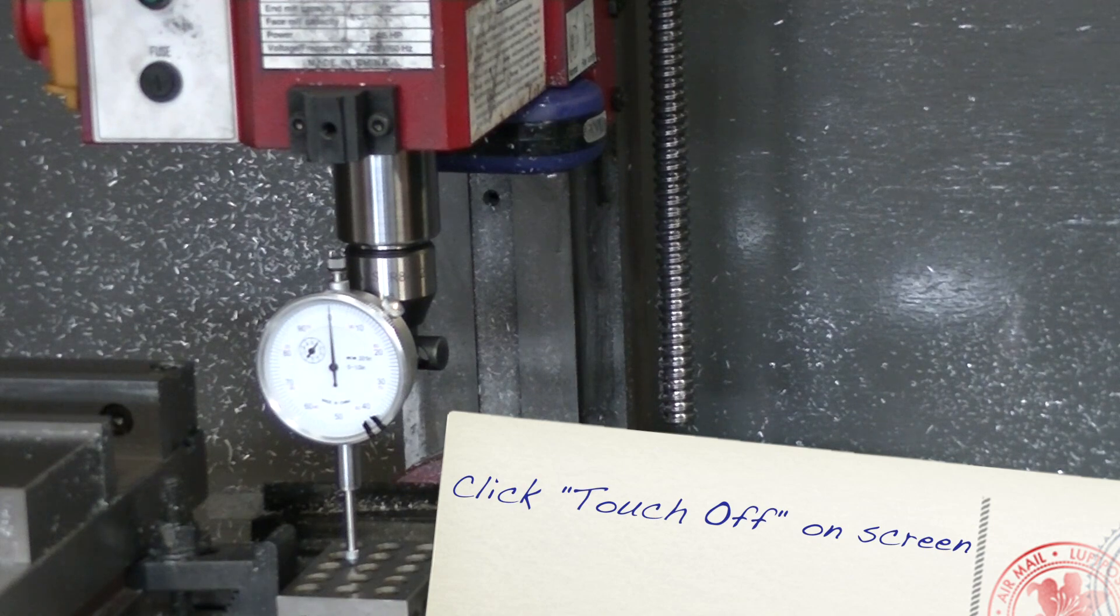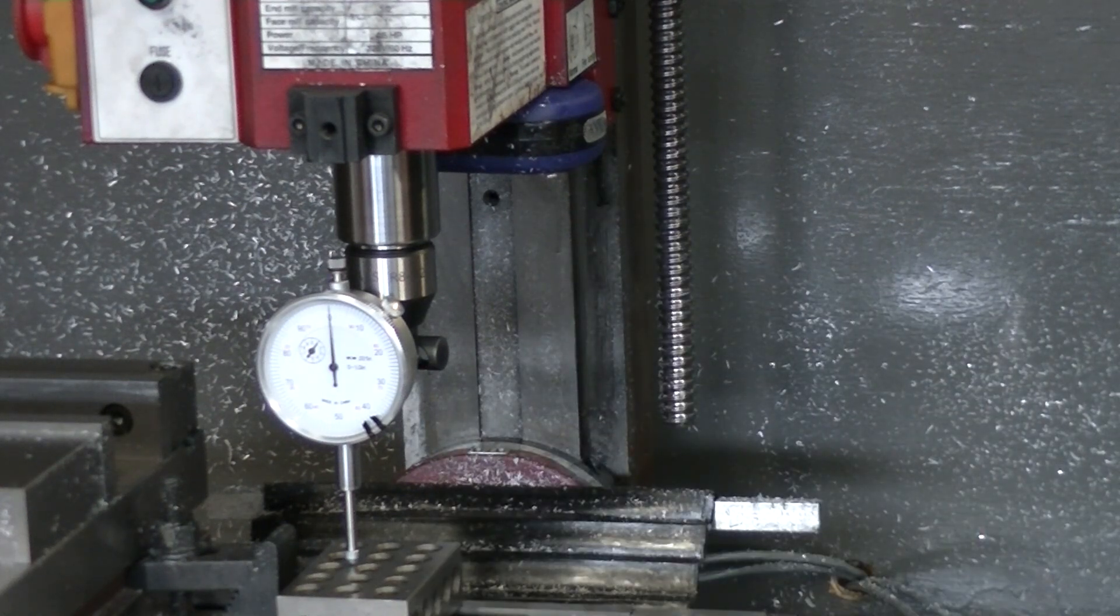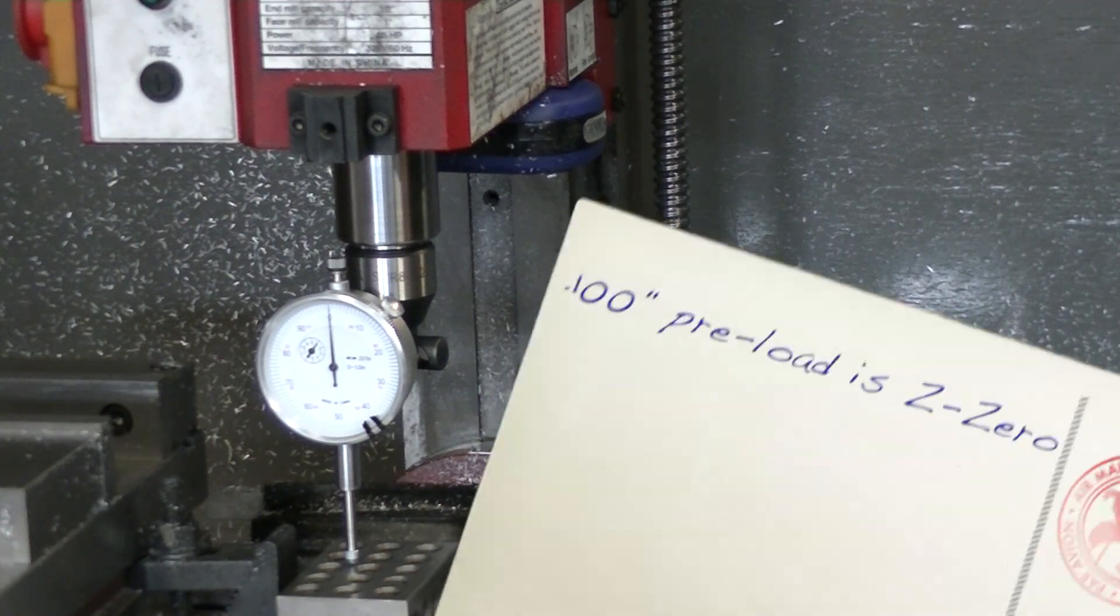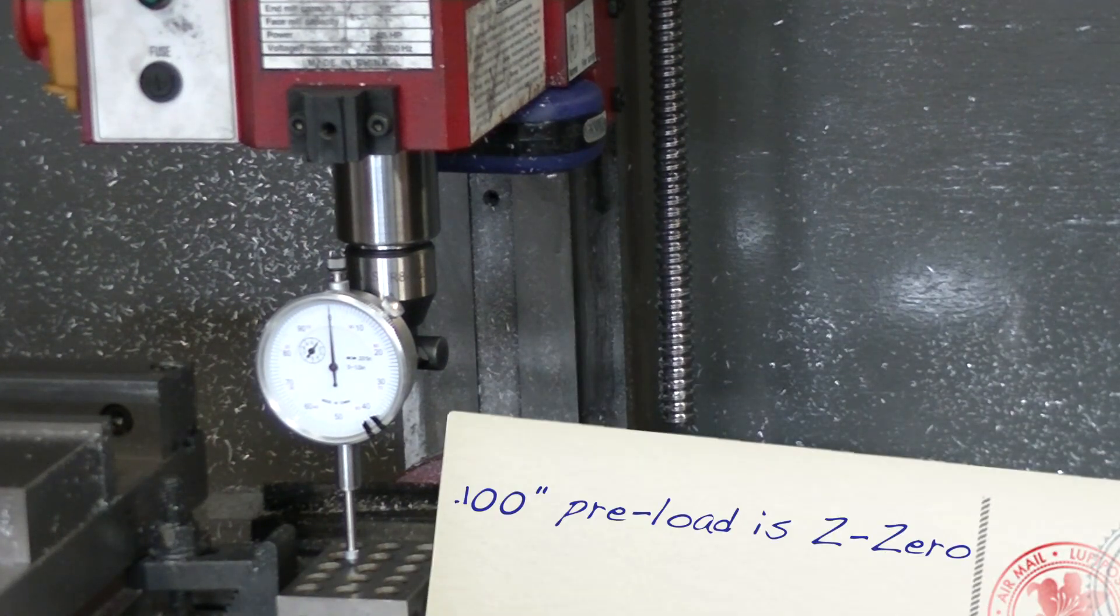So I'm going to touch off my 0 for Z. I'm just going to tell it coordinate system. We're using G54. It doesn't matter, but I'm telling it that at one hundredths depth, that is my zero point.